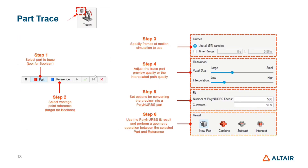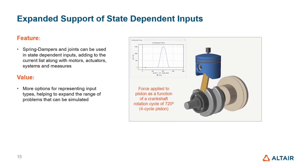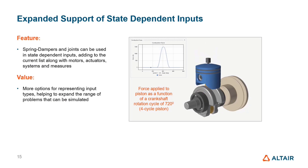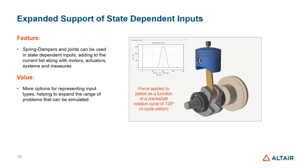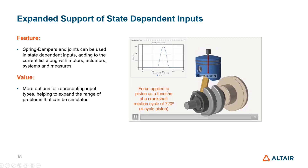We've also expanded support for state-dependent inputs. Springs, dampers, and joints can now be used as state-dependent inputs. A good example is a crank piston where the force on the piston is a function of the angular displacement of the joint. This gives you more flexibility in defining interrelationships in your model.